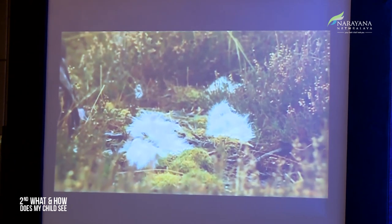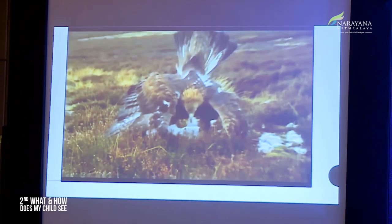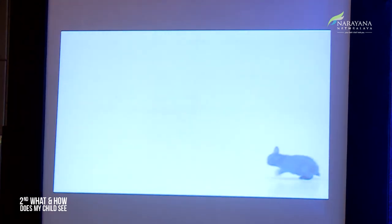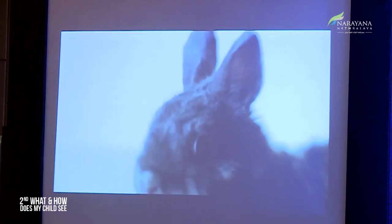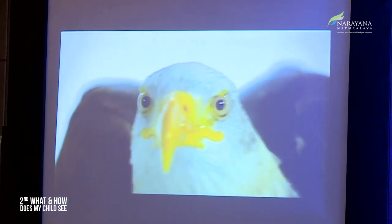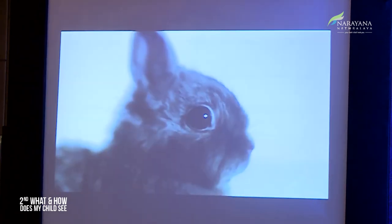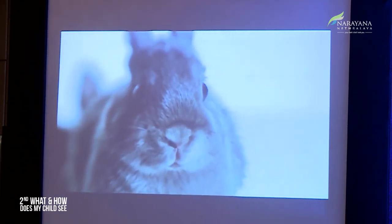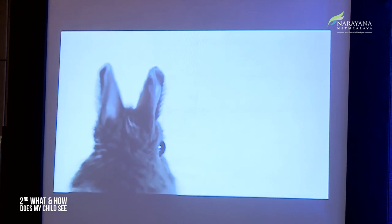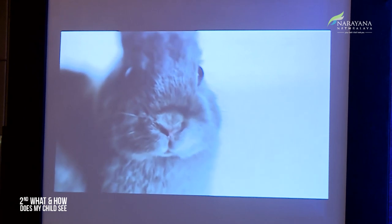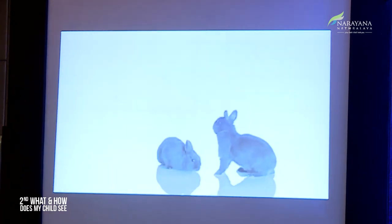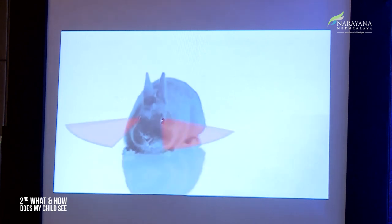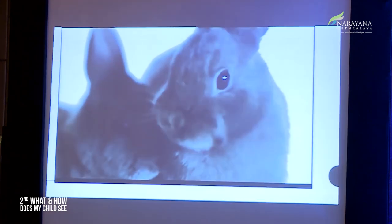An eagle has almost five times better visual acuity and better stereopsis than humans. In contrast, prey animals like rabbits and rats have laterally placed eyes, which offers them a wider field of vision. As a trade-off for laterally placed eyes, stereopsis is reduced. The eyes are placed almost on the side, offering a very wide field of vision so the prey can identify whenever a predator is coming to attack.